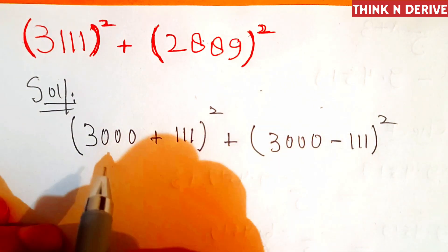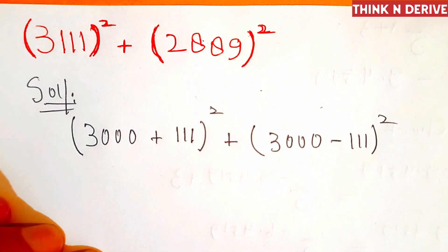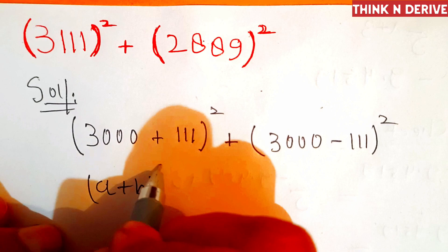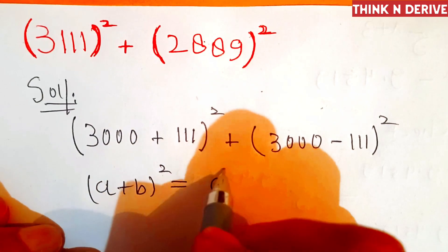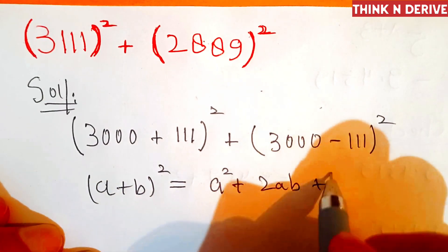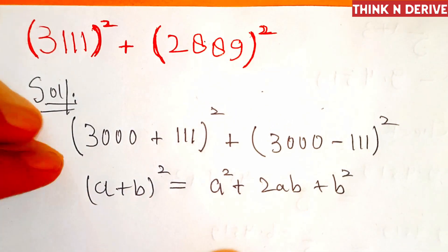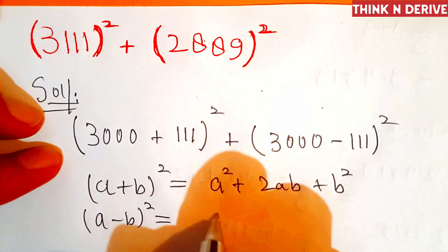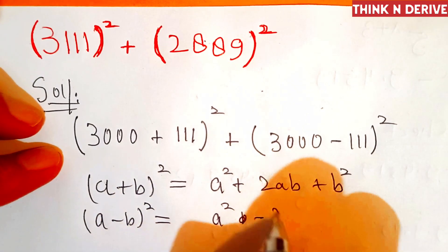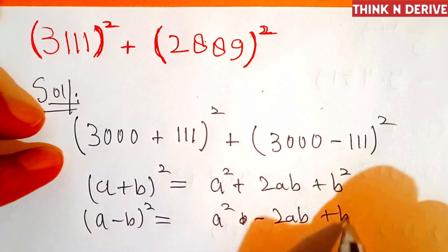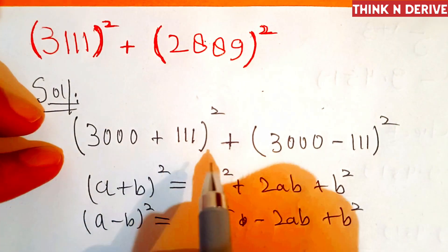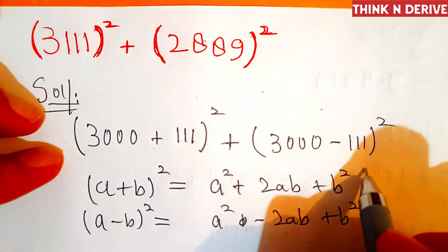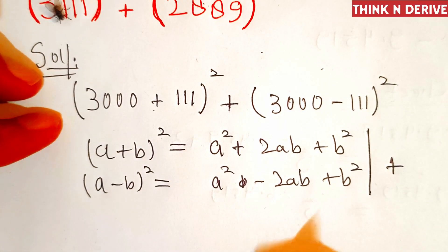Now these are both algebraic identities. The form (a + b)² equals a² + 2ab + b², and (a - b)² equals a² - 2ab + b². Since we have a sum of these identities, when we add these two identities, what will we get?